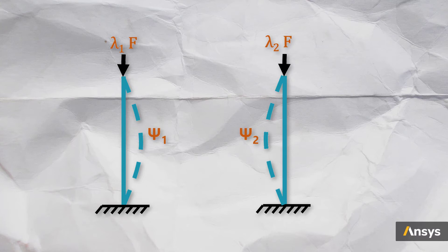So, at a load of lambda 1 times F, the structure buckles in the shape of psi 1, and at a load of lambda 2 times F, the structure buckles in direction psi 2. In this case, due to symmetry, the values of lambda 1 and lambda 2 are equal.